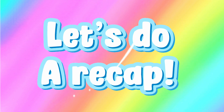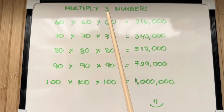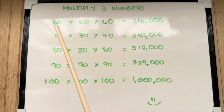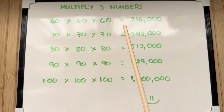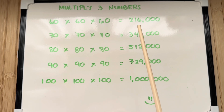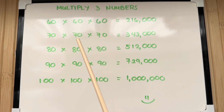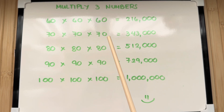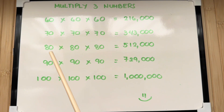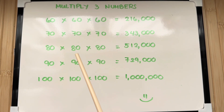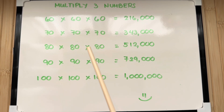Let's do a recap. Let's multiply three numbers. 60 times 60 times 60 is equals to 216,000. 70 times 70 times 70 is equals to 343,000. 80 times 80 times 80 is equals to 512,000.